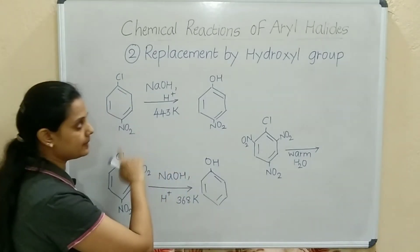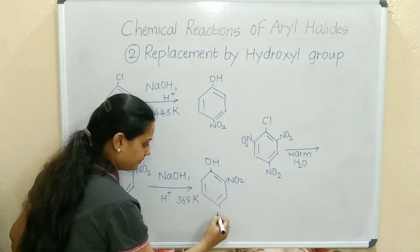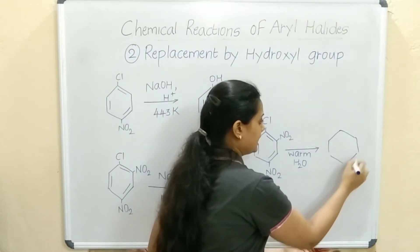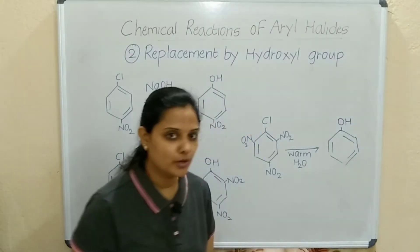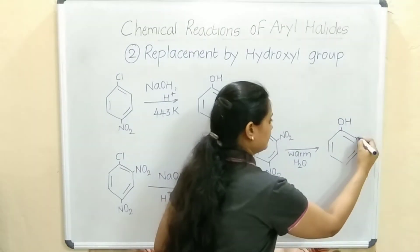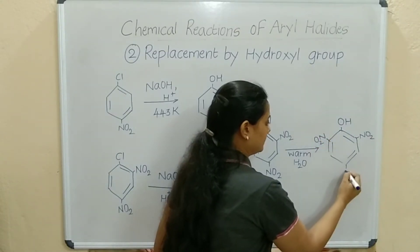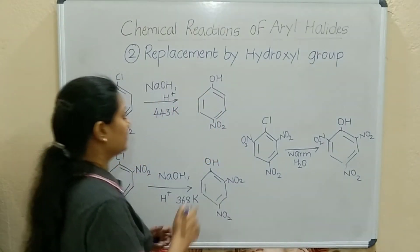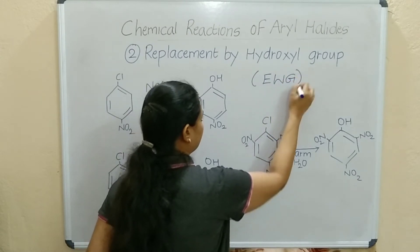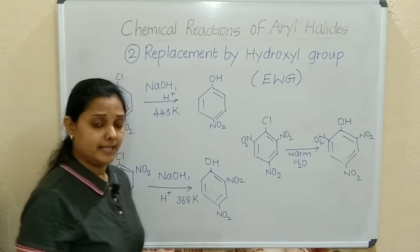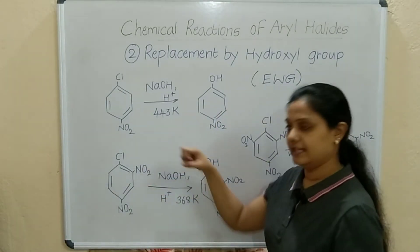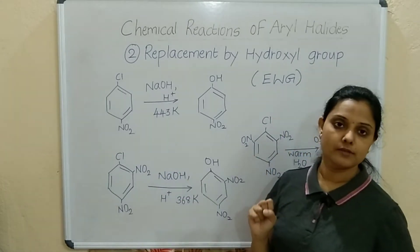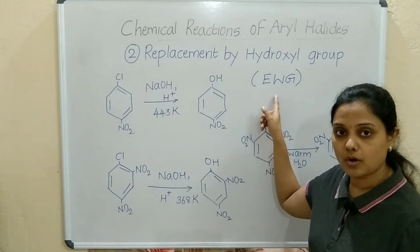For the second one, OH will come in place of Cl, and NO2 remains as it is at ortho and para positions. In the third example, Cl will also be replaced by OH. OH minus is the nucleophile. Here at ortho position we have NO2, and para position also has NO2. NO2 is called EWG — electron withdrawing group — and it will try to withdraw electrons from the ring.